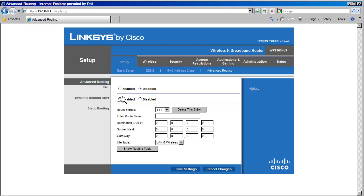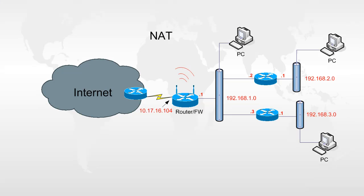In this example, we are going to leave NAT enabled and will use static routing to tell the router about other networks on the inside. Let's take a look at our network topology again. As you can see, we need to tell the router about networks 192.168.2.0 and 192.168.3.0.